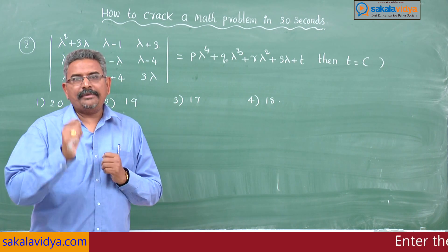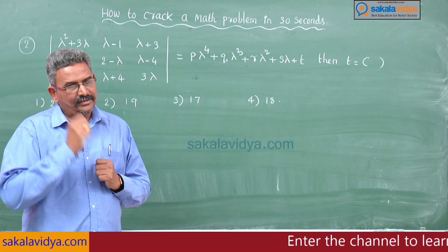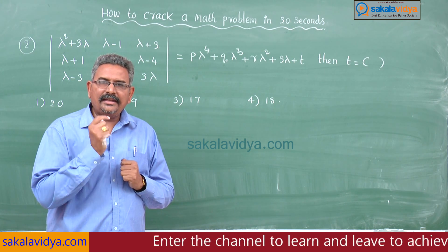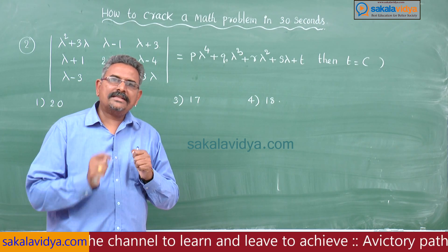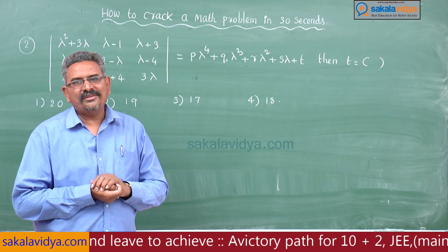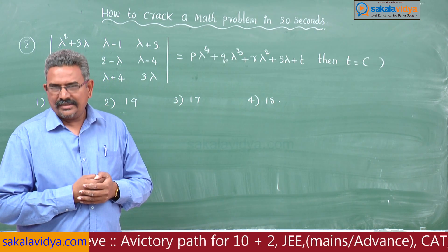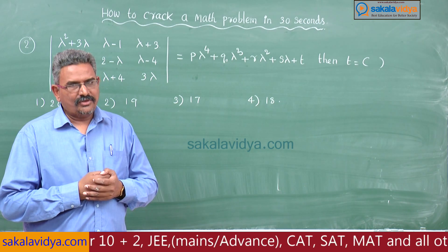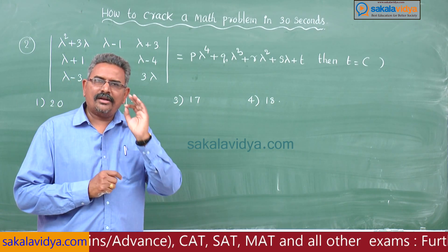Since t is independent of lambda, we have a trick we can use. For any real value of lambda, t will always be constant. So why not take lambda equal to 0? Take lambda equal to 0 on both sides and we directly get the required value of t.